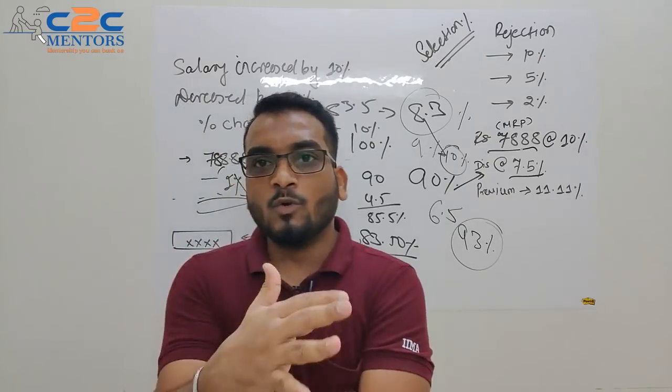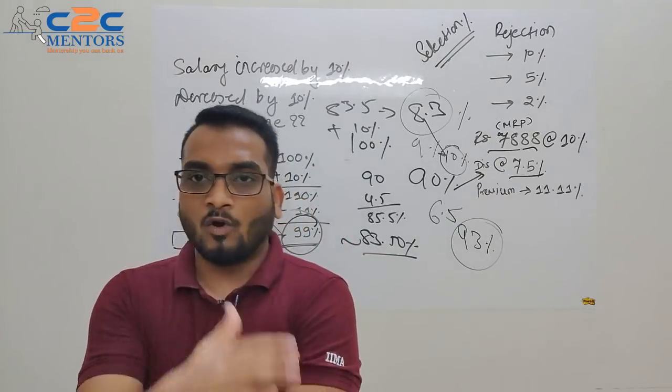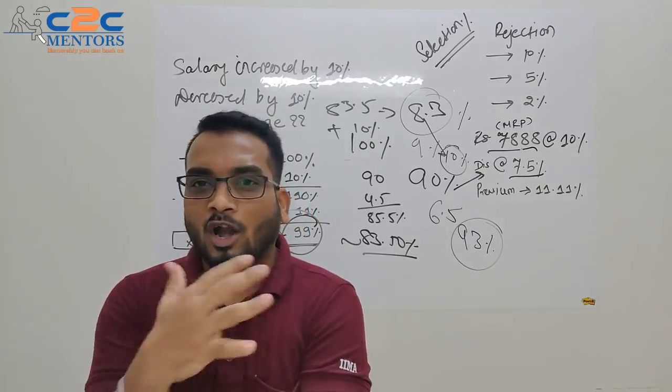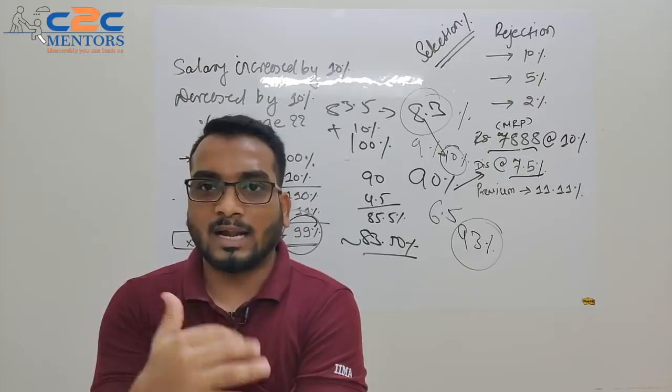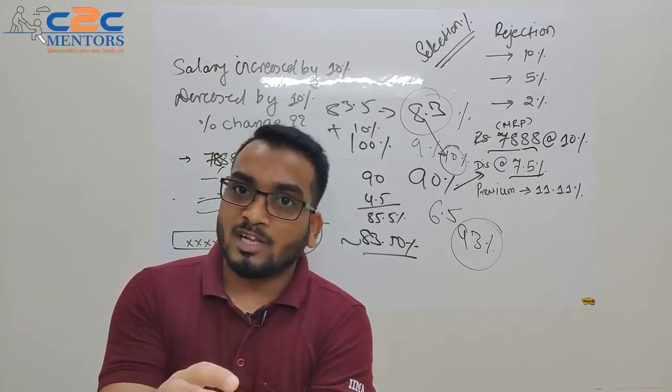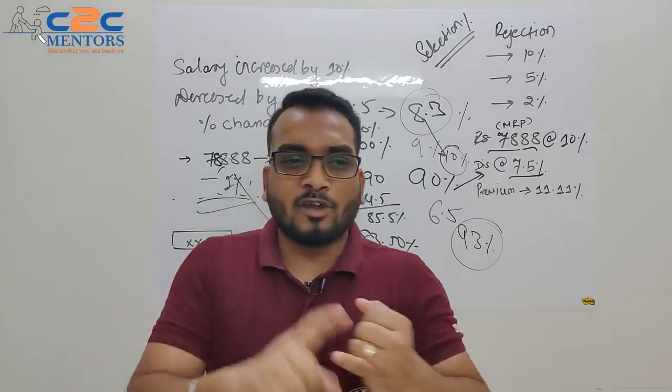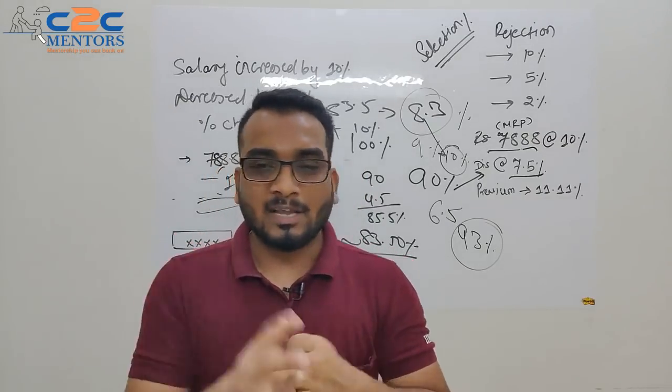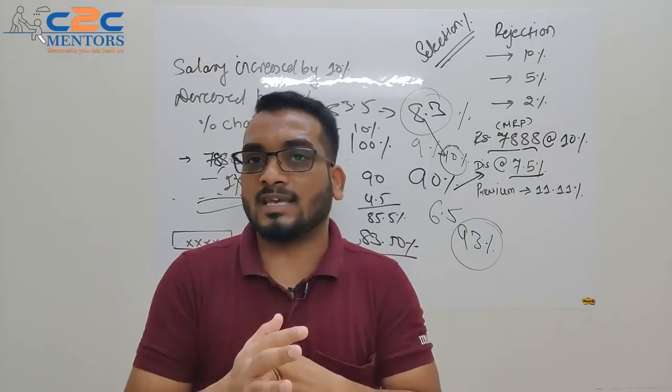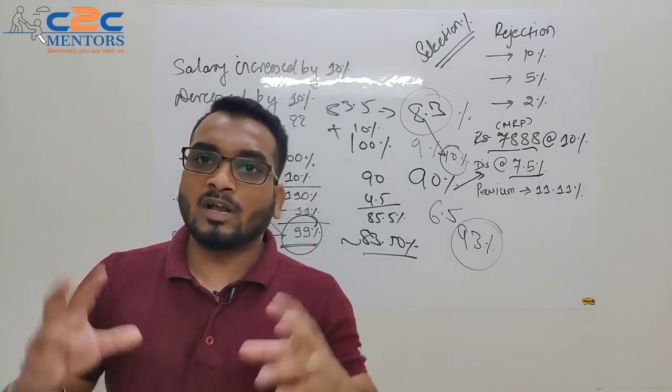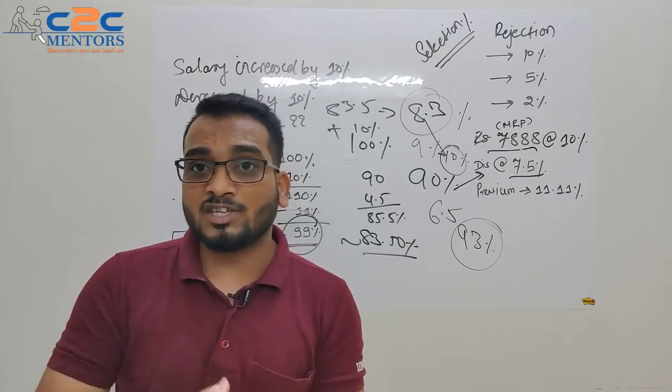So you can club them into the category that if this type of question comes, we won't touch the number. Directly take 100%, do calculation on 100. Whatever percent comes at the end, apply that to the main number and you will get your answer. These are the things that we do mostly in our classroom program, in our online program. We have a batch starting from 7th July. I am gonna put lot of videos, my demo lectures and all that, online lectures. So subscribe to the channel for more such videos where you will get more shortcuts in a very simple way.